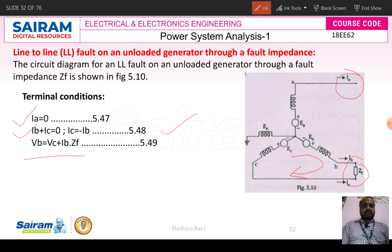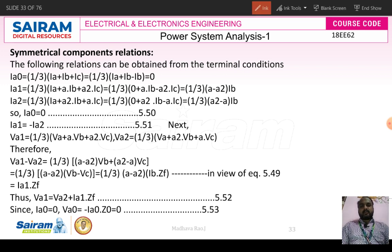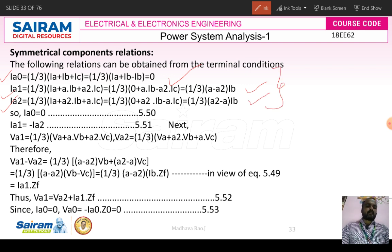Coming to the symmetrical component relations, IA0, IA1, IA2 are the symmetrical component currents in terms of phase currents: IA0 equals one-third into (IA plus IB plus IC). Since IB equals minus IC and IA equals zero, we get IA0 equal to zero, IA1 equal to one-third into (A minus A-squared) into IB, and IA2 equal to one-third into (A-squared minus A) into IB.